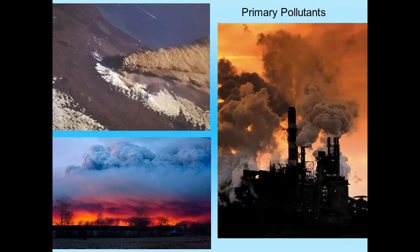Here are examples of both. The top picture is a volcano that erupted in Russia in 1994. You can see the ash cloud — those are primary pollutants. What you don't see is the SO2, carbon monoxide, and hydrogen sulfide gases also released — also primary pollutants. The bottom picture is a wildfire in California, also producing natural primary pollutants. The picture on the right is smoke from a factory — artificial primary pollutants. Primary pollutants have both natural and artificial sources.